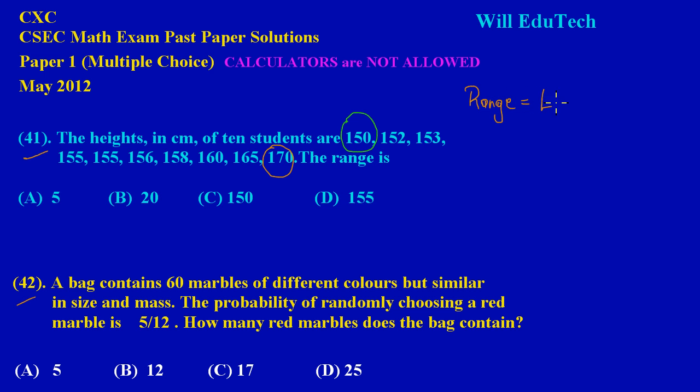Let's make a quick note here: range is equal to the largest minus the smallest. So the largest value is 170, so I'm going to simply say 170 minus 150. Therefore, my answer is 20. The range is 20, so obviously option B would be the correct option.